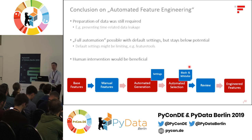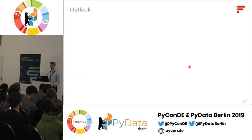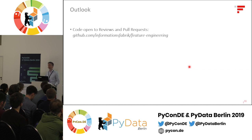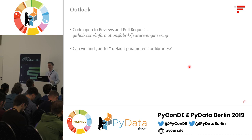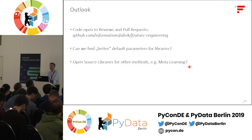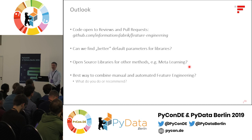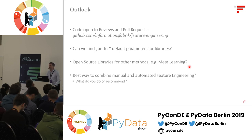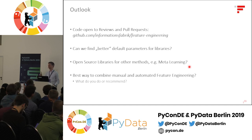On this final slide, the code is open for reviews and pull requests — we'd be very happy if you'd like to extend it or change some assumptions. One open question: can we find better default parameters for these libraries? Maybe there are other open source libraries for other methods to include, such as AutoFeat, other methods, or even meta-learning. And I'm interested in your opinion on what you think could be best practice for combining manual and automated steps of feature engineering.